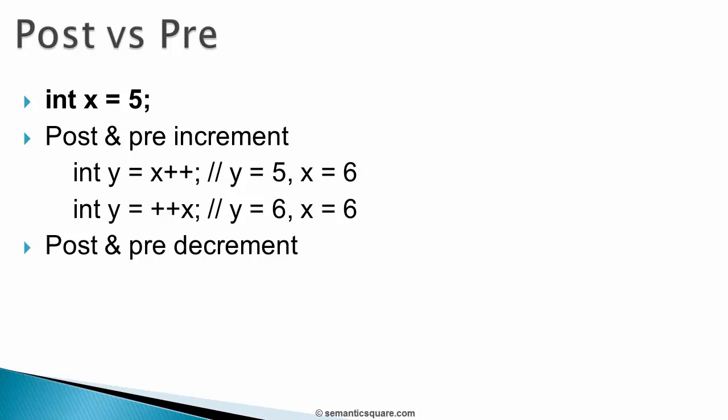Post and pre decrement operators also work in the same way. Here with post decrement operation, y is first assigned the current value of x and then x is decremented. So y will still be 5 whereas x will be 4. With pre decrement operation, x is first decremented and then is assigned to y. So both x and y will be 4.